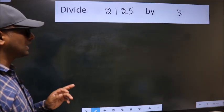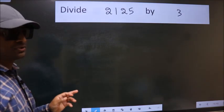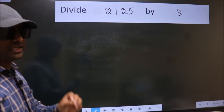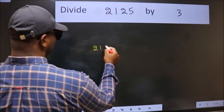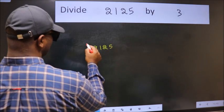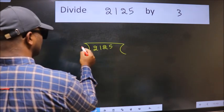Divide 2125 by 3. To do this division we should frame it in this way. 2125 here, 3 here.